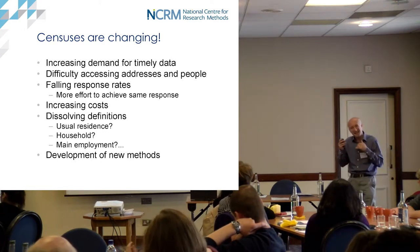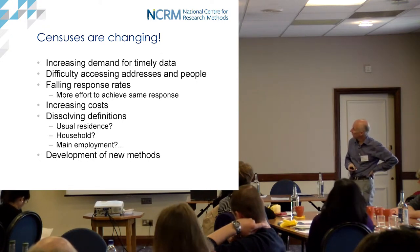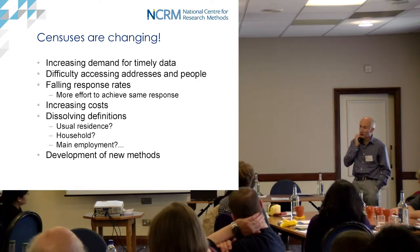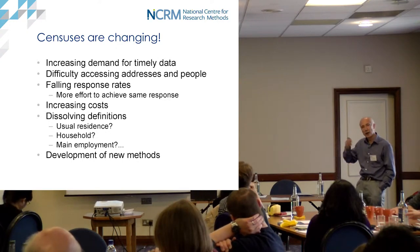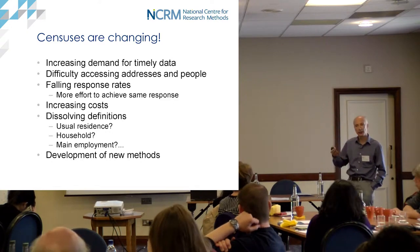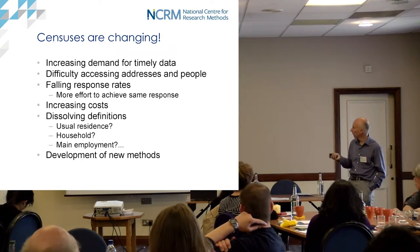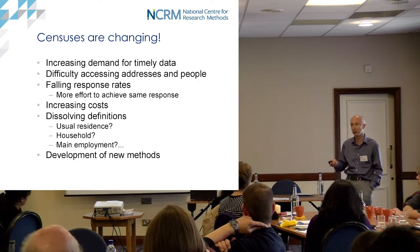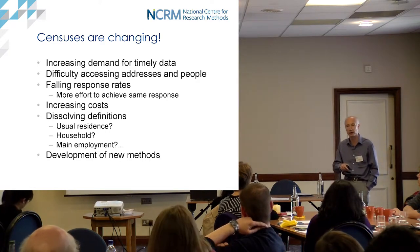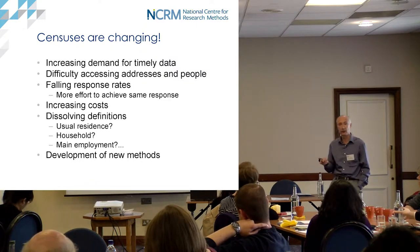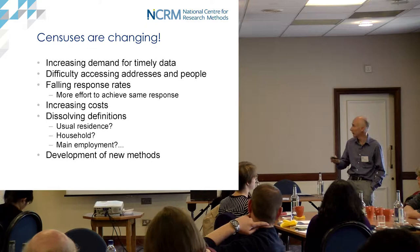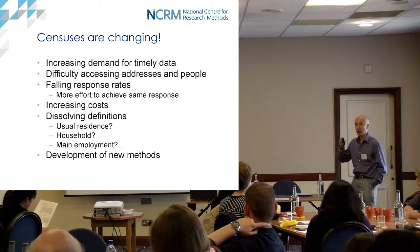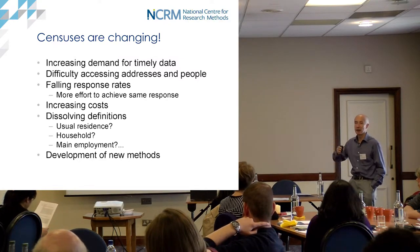Not only because people are less willing to respond, but they lead very busy lives - lots of households are unoccupied right through the working day, lots of people spend some of the week in one place and some in another. There are just lots of practical circumstances making it difficult to do a traditional census enumeration. As a result, if you leave everything the same, the response rate falls. If you want to keep the response rate up, you've got to spend more money.